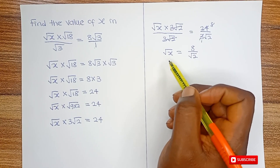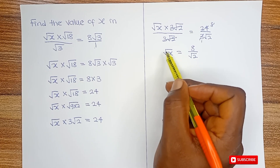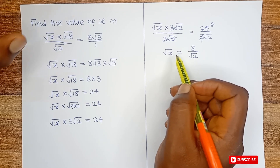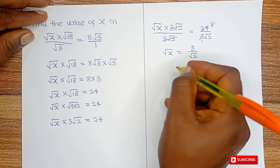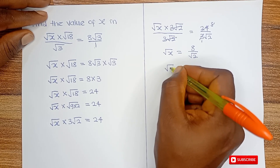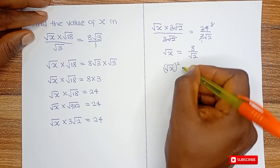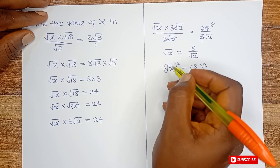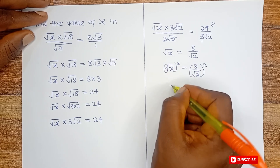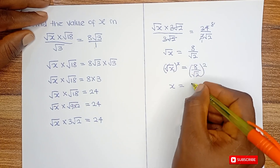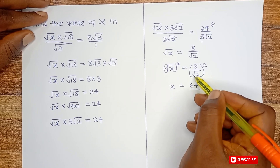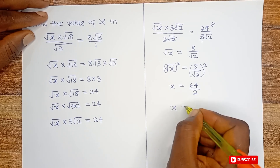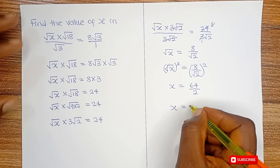Have we gotten our final answer? No — we are looking for x, not square root of x. To eliminate the square root, we introduce the opposite, which is squaring. So we square both sides: square root of x squared equals the quantity 8 over root 2, squared. On the left, square root and square cancel out, giving x. On the right, 8 squared is 64 and root 2 squared is 2. So x equals 64 divided by 2, which gives us 32.